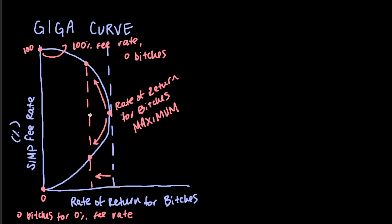So in a sense, you must pay the optimum rate for bitches — the B-O: Bitches Optimal.